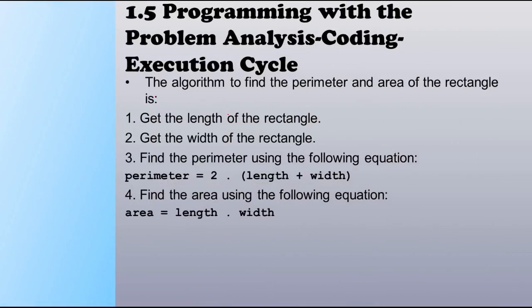The common algorithm to find the perimeter and area of the rectangle is: first, get the length of the rectangle; second, get the width of the rectangle; third, find the perimeter using the equation Perimeter = 2 × (Length + Width); and finally, find the area using the equation Area = Length × Width. We can write this in C++ as well.